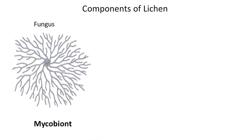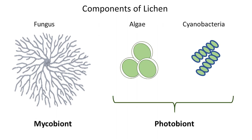Lichens consist of two main partners. The fungal component is known as the mycobiont, while the photosynthetic partners, which include algae and cyanobacteria, are collectively referred to as the photobiont. In certain cases the terms become more specific, with algae being called phycobiont and cyanobacteria termed cyanobiont.